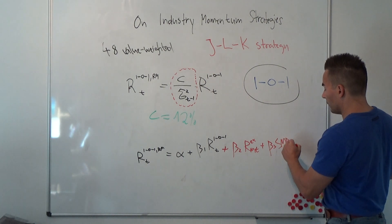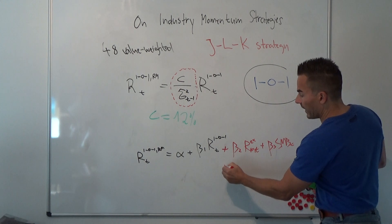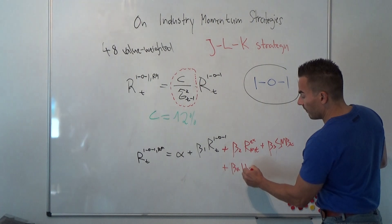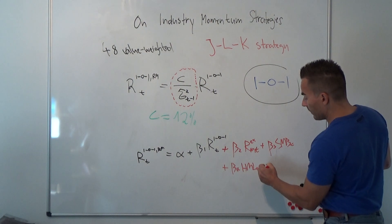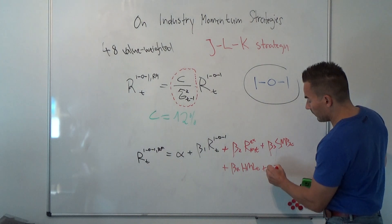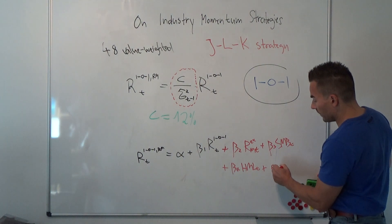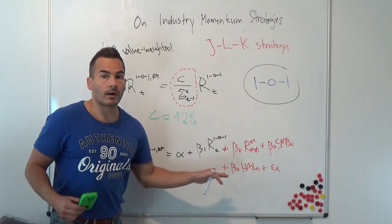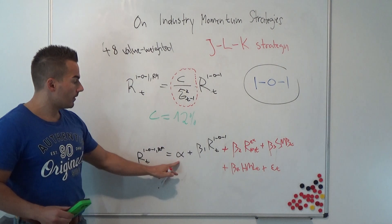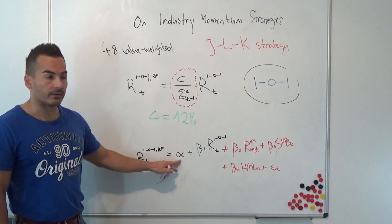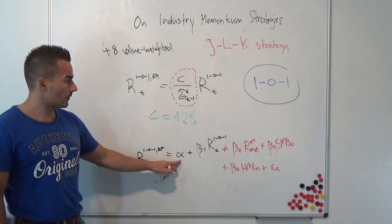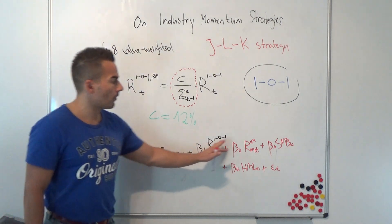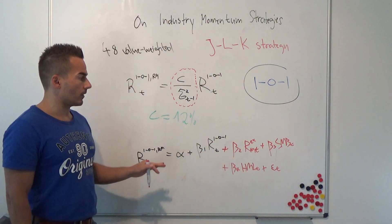We can add beta3 times SMB and as a final control variable the value factor HML_t. Because it's a regression equation we have to add a residual term epsilon_t. We can add different control variables and then check again if our intercept term is positive. If it is positive, we have excess returns that survive controlling for different sources of risk on the right-hand side.